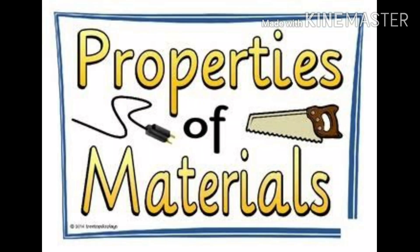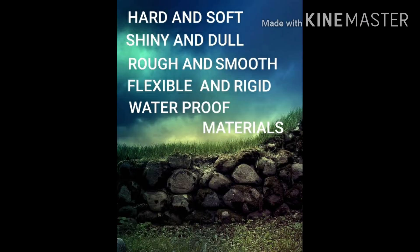We learned about properties of materials. There are 5 types of properties of materials. They are: hard and soft, shiny and dull, rough and smooth, flexible and rigid, and waterproof material.